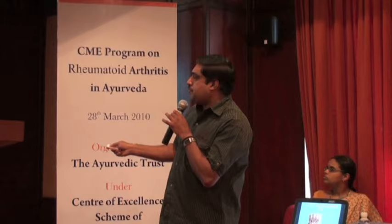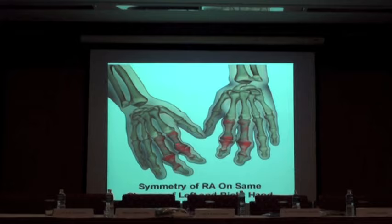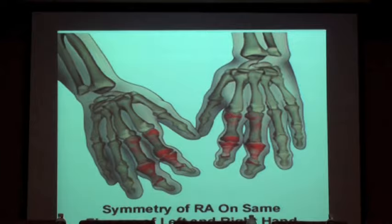This is the acute interphalangeal joint picture. Thamani Anguli Sandhinam Sangraha etc. is nothing other than this particular clinical picture. You can also see the symmetry of RA on the same fingers of left and right hand — bilaterally symmetrical nature of joints is applicable to our science as well.